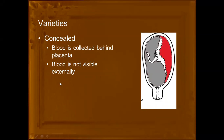The next type is concealed. From the word itself — concealed — the blood is collected at the back side of the placenta. Bleeding has started but blood will not flow outside; it is collected behind the placental site. In concealed abruptio placenta, blood is collected behind the placenta and is not visible externally.